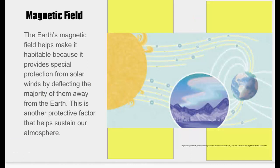Another factor in earth's habitability is the magnetic field of earth. What that does is it gives special protection against solar winds. It deflects the majority of them away from the earth.